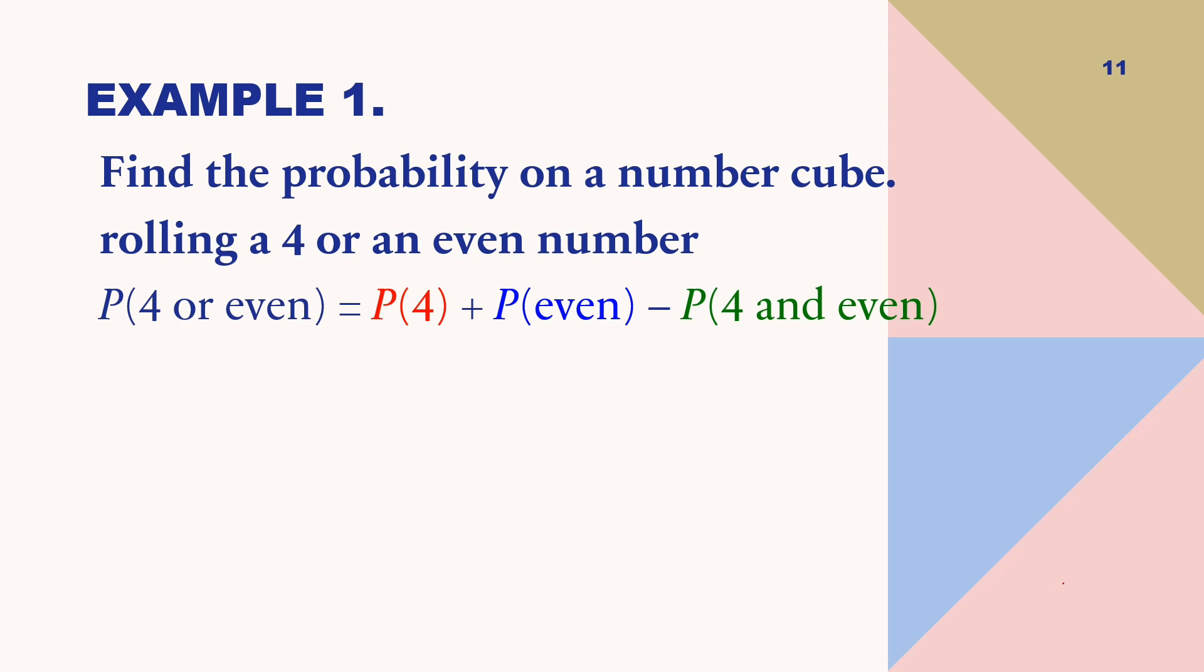The probability of four or even is equal to finding first the probability of rolling number four plus the probability of your even number minus the probability of their intersection, which is four and even. Take note that four is also an even number. So, let us take the probability of your first event, which is rolling number four. And the results are, for the probability of rolling number four, we have one over six plus the probability of rolling an even number is equal to three over six minus their intersection, which is finding the probability of four and even. So, one over six plus three over six minus one over six is equal to one half.